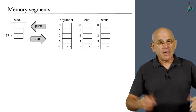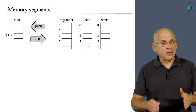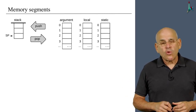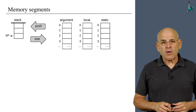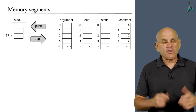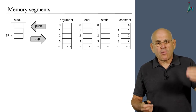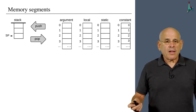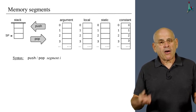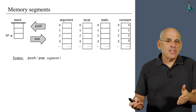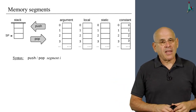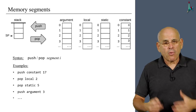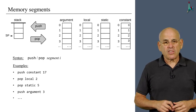We have extended the story: instead of interacting with a single memory segment, we now interact with several different memory segments. We also add a segment called 'constant', which is truly a virtual segment because it contains just the numbers 0, 1, 2, and so on. Once you have these segments in place, the push and pop commands take as arguments the name of the segment and the index in that segment. For example: push constant 17, push local, pop local 2, pop static 5, and so on.